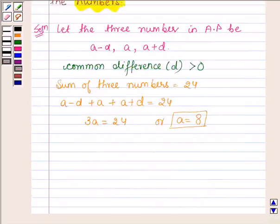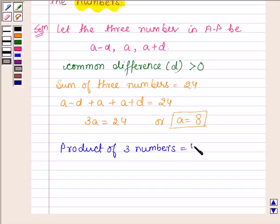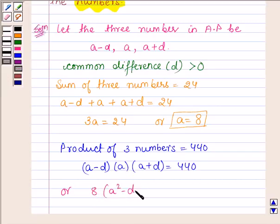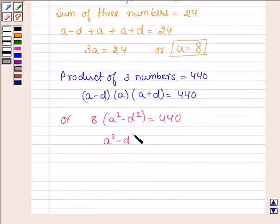Also, we are given that the product of these three numbers is equal to 440. So this implies A minus D into A into A plus D is equal to 440, or since A is 8, A square minus D square is equal to 440. So A square minus D square equals 440 upon 8, which gives 55.